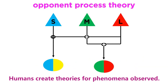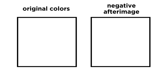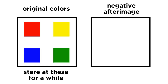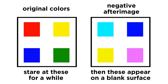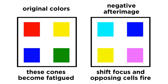This can be combined with opponent process theory, which outlines opponent systems describing how the cones connect to the ganglion cells. In this model, a combination of excitatory and inhibitory responses controls what color combinations can be seen. A ramification of this mechanism is the notion of the negative afterimage seen after staring at something for an extended period of time, whereby the afterimage is always the complementary color. This is because staring at something of a particular color causes certain cones to become fatigued while others do not fire at all, so when shifting focus to a blank surface, only the opposing cells will fire.